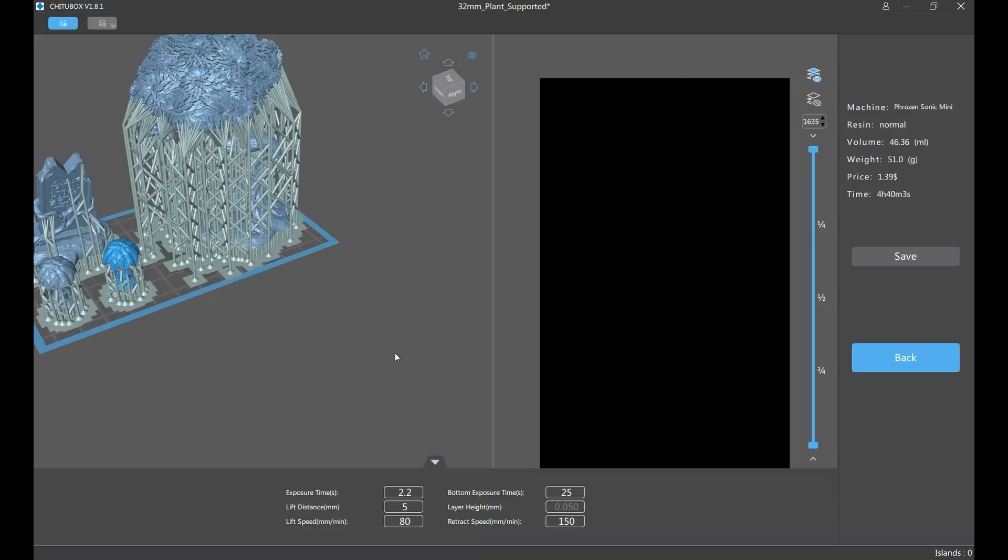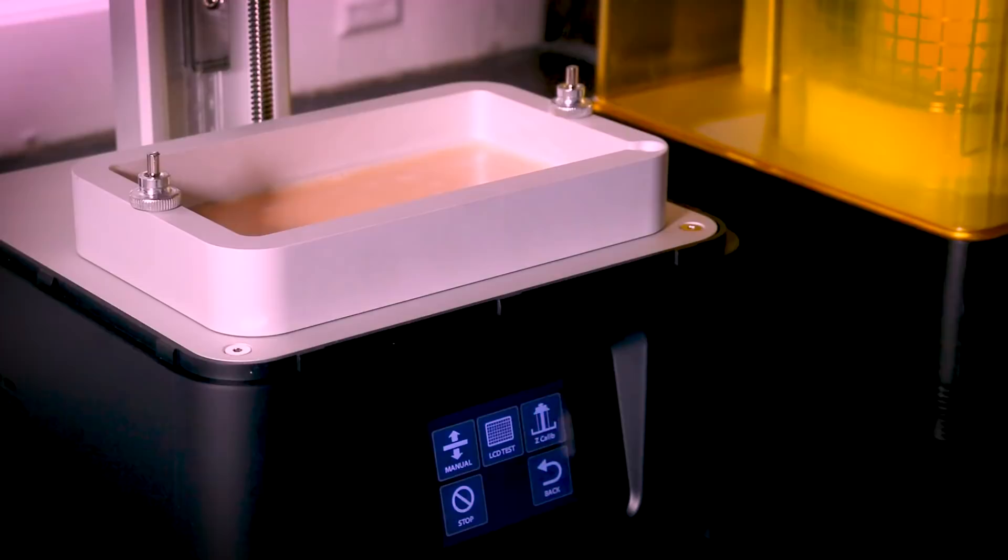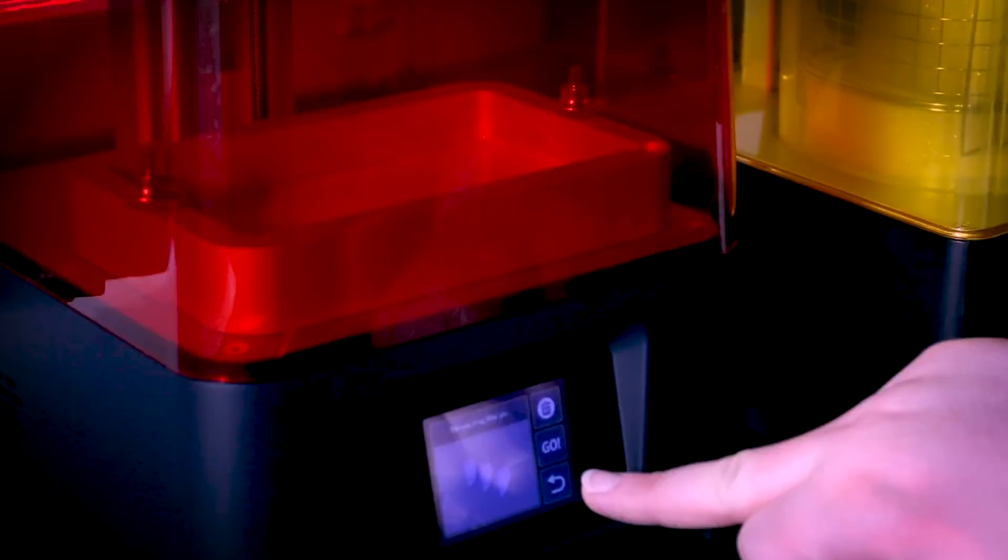After waiting for the program to slice our models, we click save, put the file onto a USB key and now we're ready to print. After putting on a respirator, eye protection and nitrile gloves, we're going to give the resin a nice and good shake and then carefully fill the goo tray about one third of the way up and then replace the cover. Once our machine is turned on, we can then plug in the USB key, select our file and press print. It's really not more complicated than that.